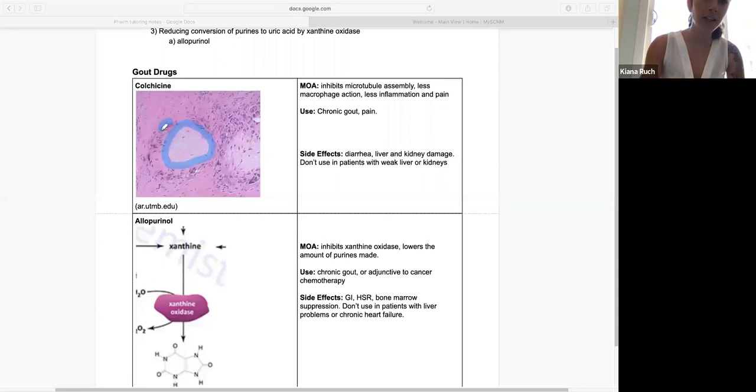All of these things surrounding the crystal, those dark purple stained things—here's another one over here, here's the crystal—these are macrophages. As you can see, there are a lot of macrophages surrounding the crystal. Colchicine works by inhibiting macrophage assembly, so it shuts down the amount of macrophages that can be made.